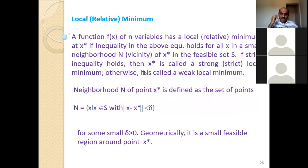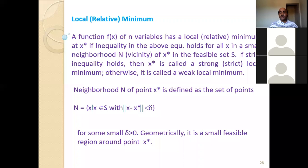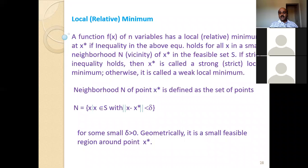Similarly, we have another type of minimum called the local minimum. The local minimum is: a function f(x) of n variables has a local or relative minimum at x* if the inequality holds for all x in the small neighborhood N of x* in the feasible set S. If strict inequality holds, then x* is called a strong local minimum; otherwise it is called a weak local minimum. Please try to understand in mathematical form only — that is always better for us.